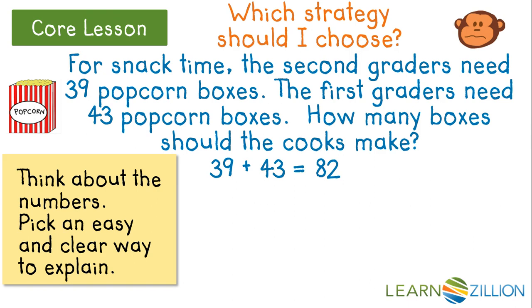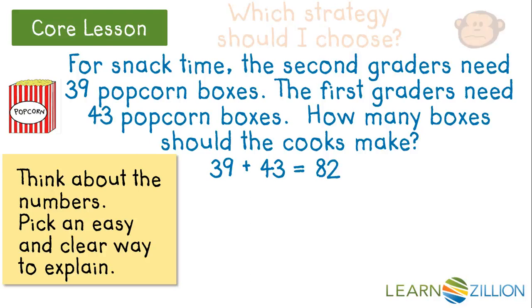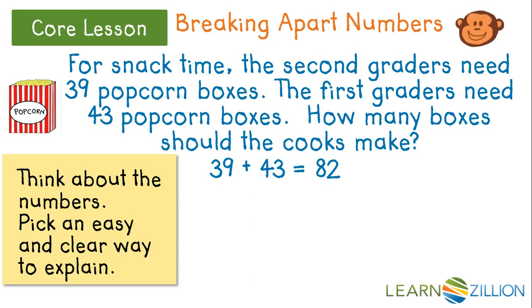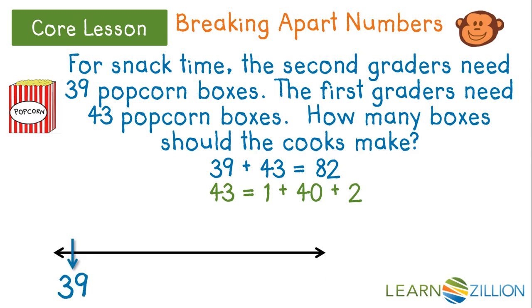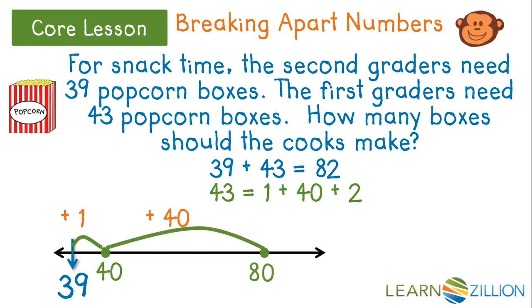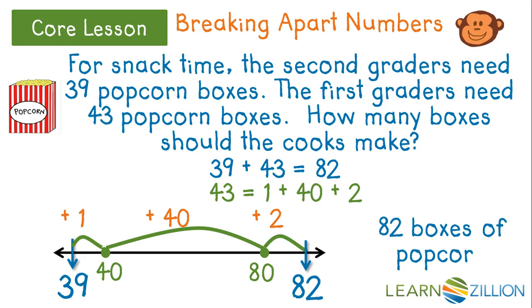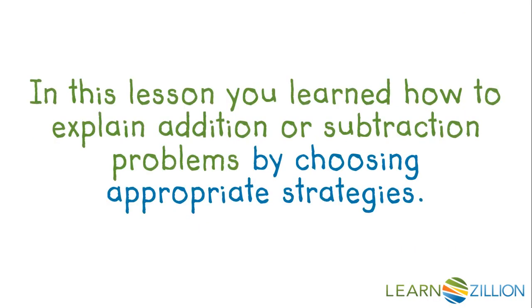The number 39 is close to 40 and it's easy to add to tens, so the monkey is going to break apart the number 43. He uses a number line to show how he adds the parts of 43: 39 plus 1, plus 40, and plus 2 more. He proves that the cooks need to make 82 boxes of popcorn. In this lesson, you learned how to explain addition or subtraction problems by choosing appropriate strategies.